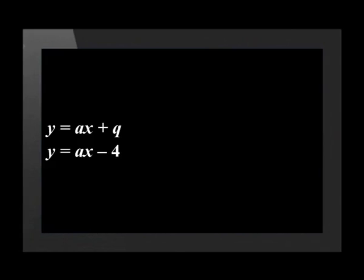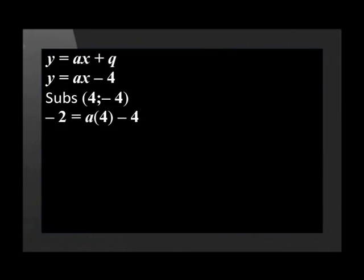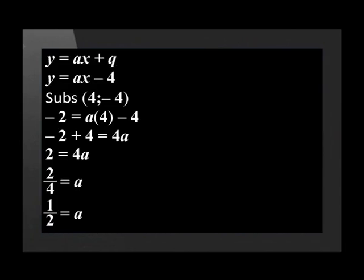Now we substitute this into the standard form of the function: y equals ax minus 4. We still need to find the value of a, so we move to step 3. We must find a point on the function and substitute it into the equation. The point (4, −2) lies on the line. Substituting: negative 2 equals a times 4 minus 4. Solving: negative 2 plus 4 equals 4a, so 2 equals 4a, which means a equals one half.